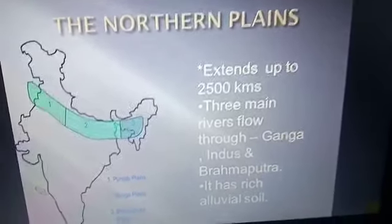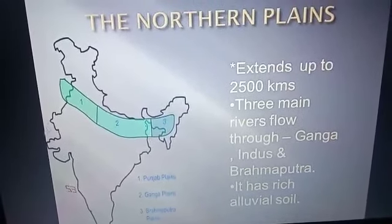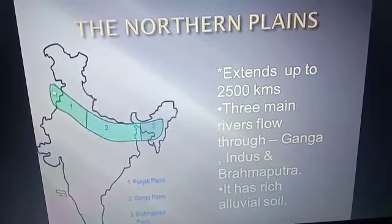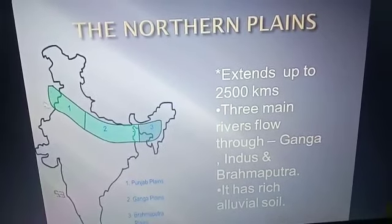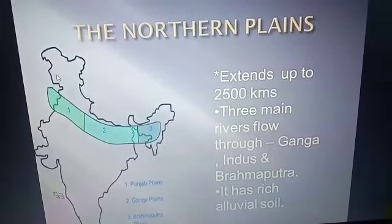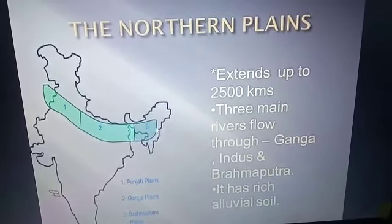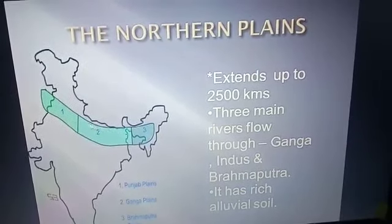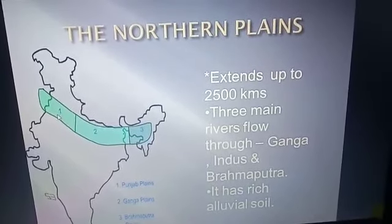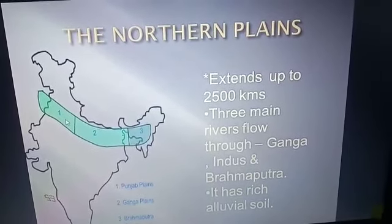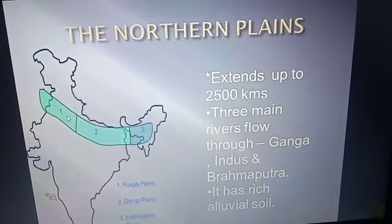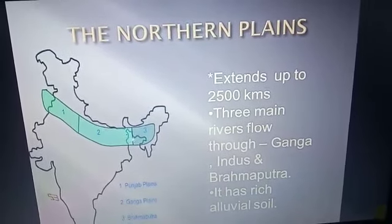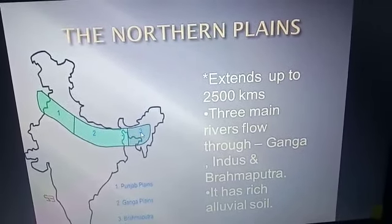On the map, the plain extends from the Indus River to the Brahmaputra, with the Ganga in between. The plain is classified into three parts: number one, the Punjab Plain; number two, the Ganga Plain; and number three, the Brahmaputra Plain.